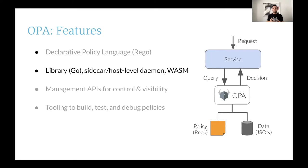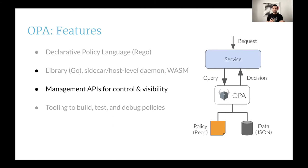OPA does not have any runtime dependencies, meaning it does not have to reach any external service to make a policy decision. You can extend OPA to do that, but that's completely optional. OPA does provide management APIs that allow you to fetch policy and data from an external service. OPA can upload its decision logs and status to an external service. All of this information can be used for offline auditing purposes.